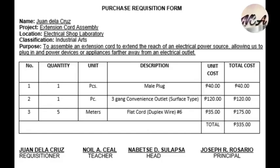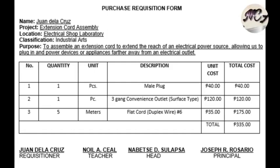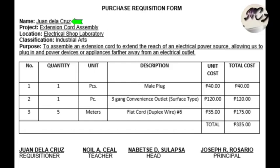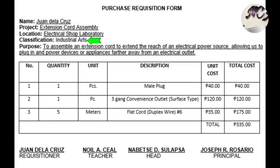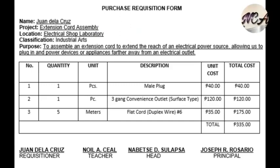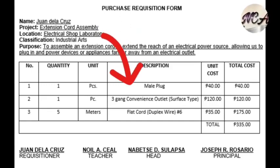Here is a sample purchase requisition form. At the topmost part is the title of the form, followed by the name, project, location, classification, and the purpose of filling up this form. In the middle part is a table that contains the details of the request, indicating the number of rows and columns.